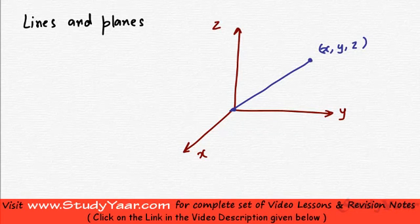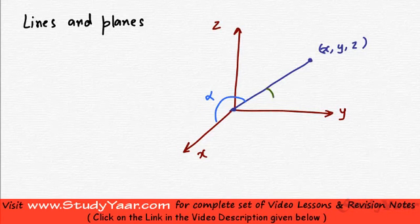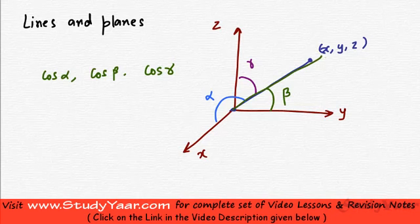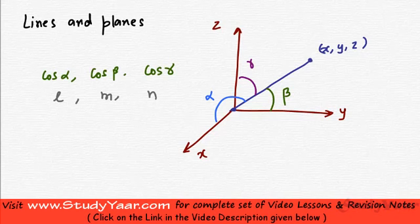Now let us assume that the angle that this line makes with X is alpha, the angle that this line makes with Y is beta, and the angle that this line makes with Z is gamma. If this is the case, then cos alpha, cos beta, and cos gamma are the direction cosines of this line, and they are generally represented as L, M, and N. So the direction cosines of a given line are simply the cosine of the angles that the line makes with the coordinate axes.